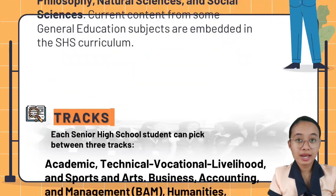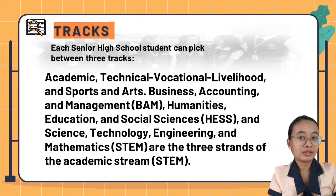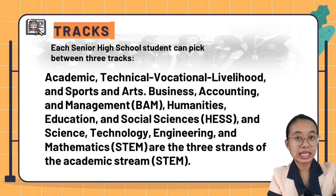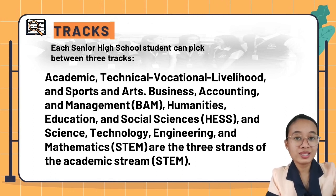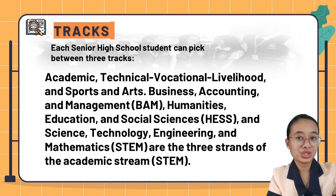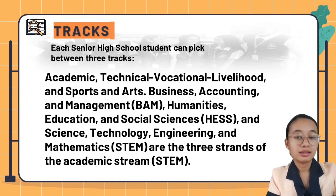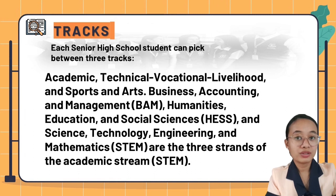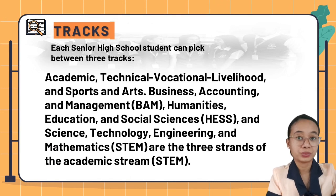Each senior high school student can pick between three tracks: the academic track, technical vocational livelihood, and sports and arts. The academic track includes three strands: Business, Accounting, and Management; Humanities, Education, and Social Sciences; and Science, Technology, Engineering, and Mathematics.